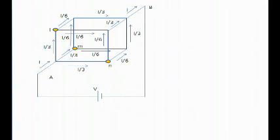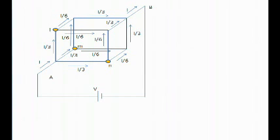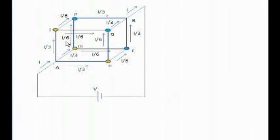Now let us find the potential at points L, M, N. The potential is V, and equal current I/3 is going out from these three branches. Since the resistance of all three branches is equal and the current is equal, the potential drop will also be equal — I/3 × 1 ohm — on all three points. So these three points L, M, N are equipotential points. Similarly, points P, Q, R are also equipotential, because from point B each is I/3 apart and all resistances are equal.